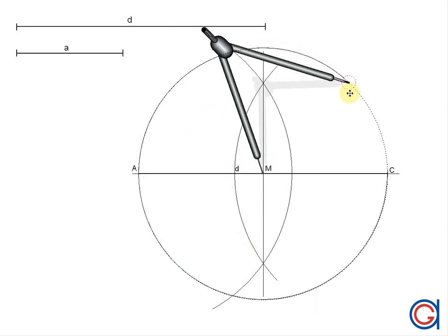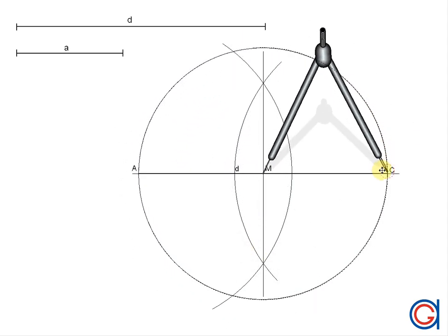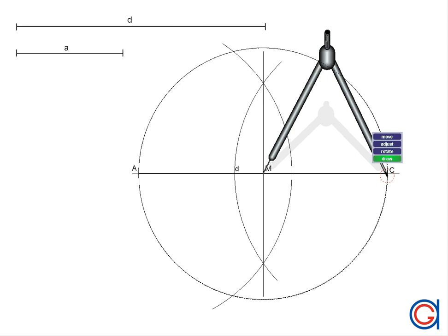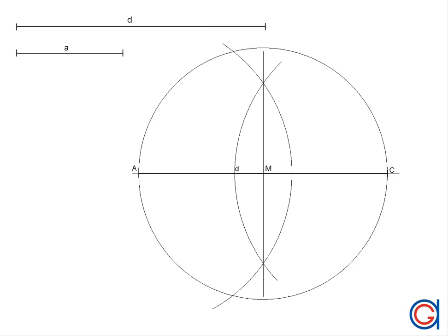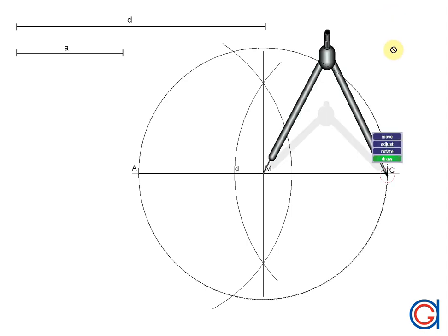Now, setting our compass on point M and with radius MC or MA, we are going to draw a circle, as can be seen here.